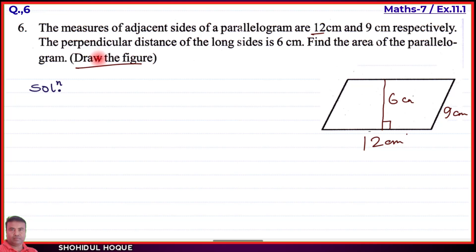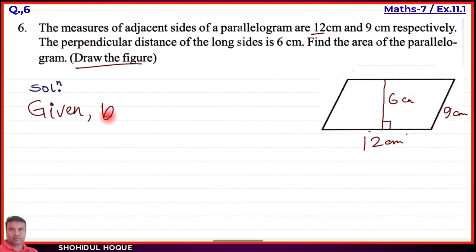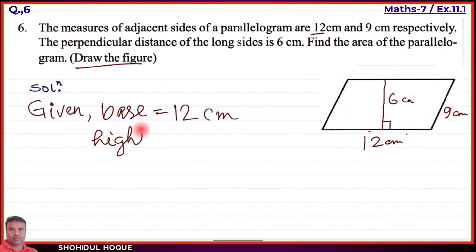To find the area of the parallelogram, we use the formula: area = base × height. The long side (base) is 12 centimeters. The perpendicular distance of the long side is the height, so height = 6 centimeters. The 9 cm side is not needed for this calculation since we have the perpendicular height for the 12 cm base.